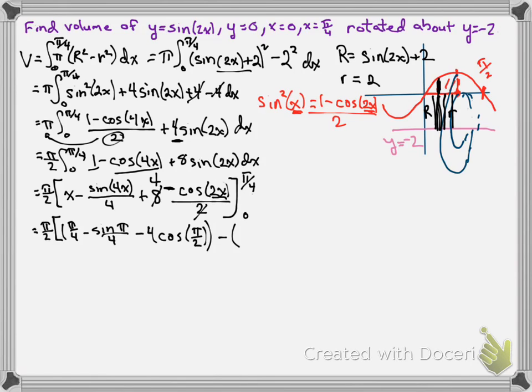Now we need to plug in our 0s. Plugging in 0 for x is 0, and then we'll have minus sine of 0 over 4, and finally minus 4 cosine of 0.